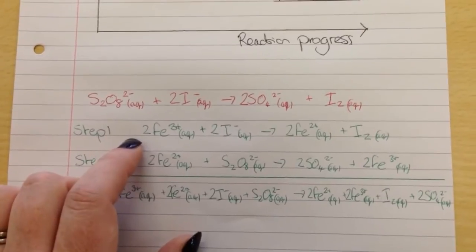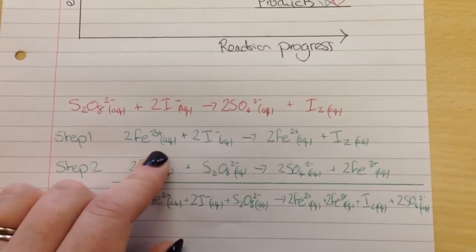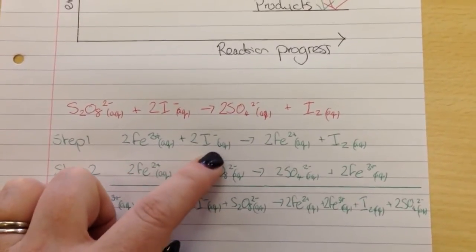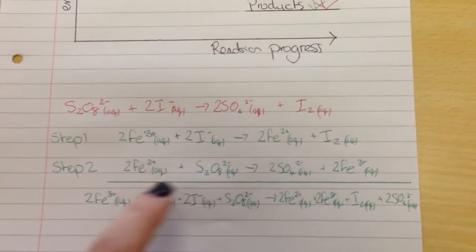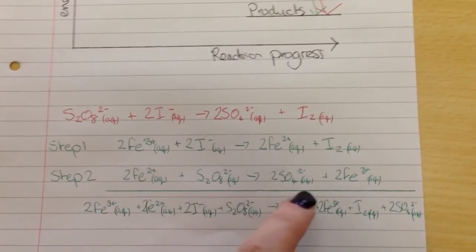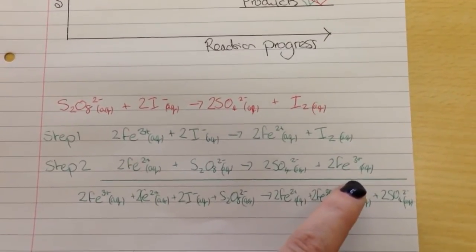So what we do is we introduce iron as the catalyst. So positive three-plus ion is going to interact quite nicely with the iodide ions. And then it's going to come out as a two-plus ion. And then the two-plus ion is going to be returned to its original three-plus state at the end.